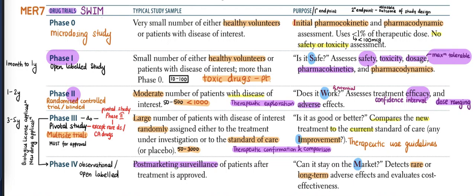Let's start with the mnemonic SWIM: S stands for Safety, W stands for Work, I stands for Improvement, and M stands for Marketing.